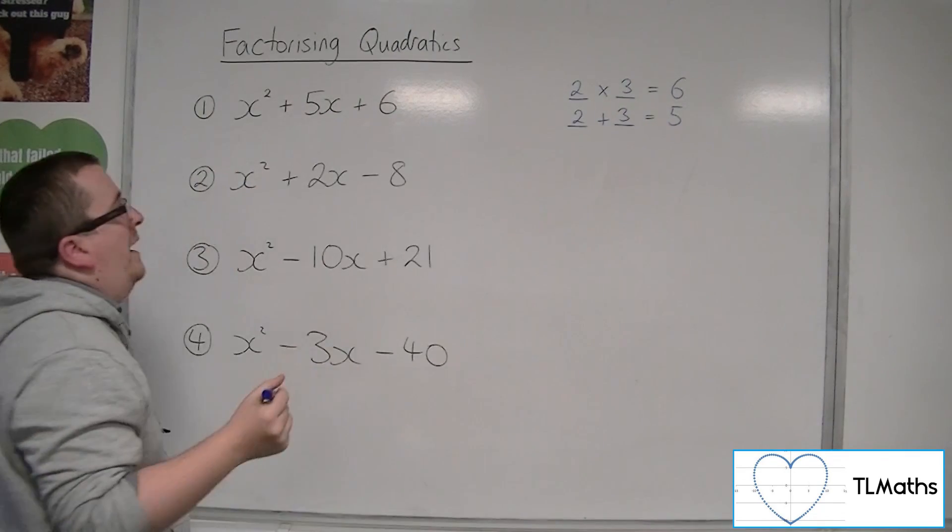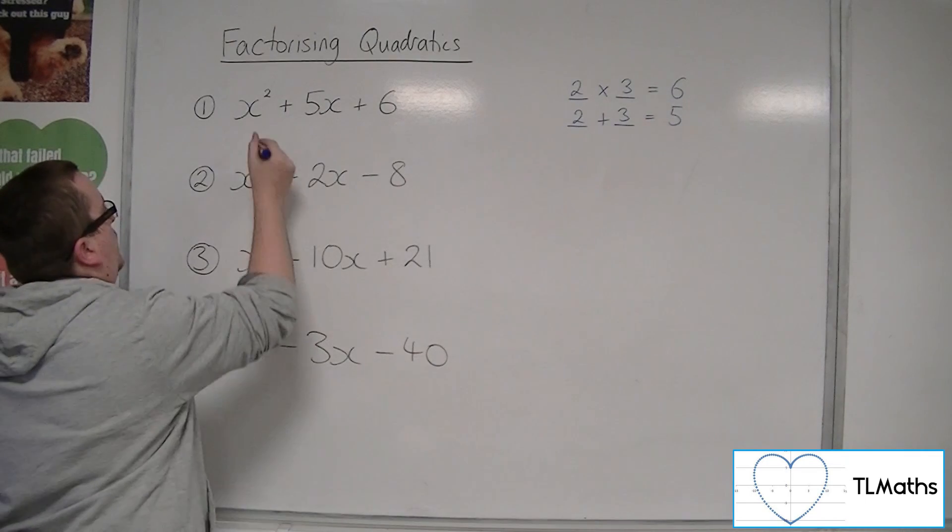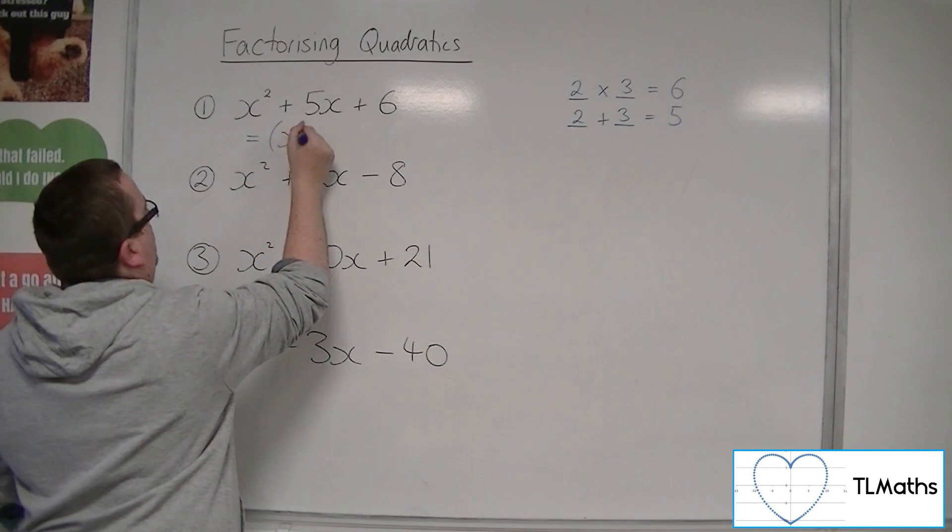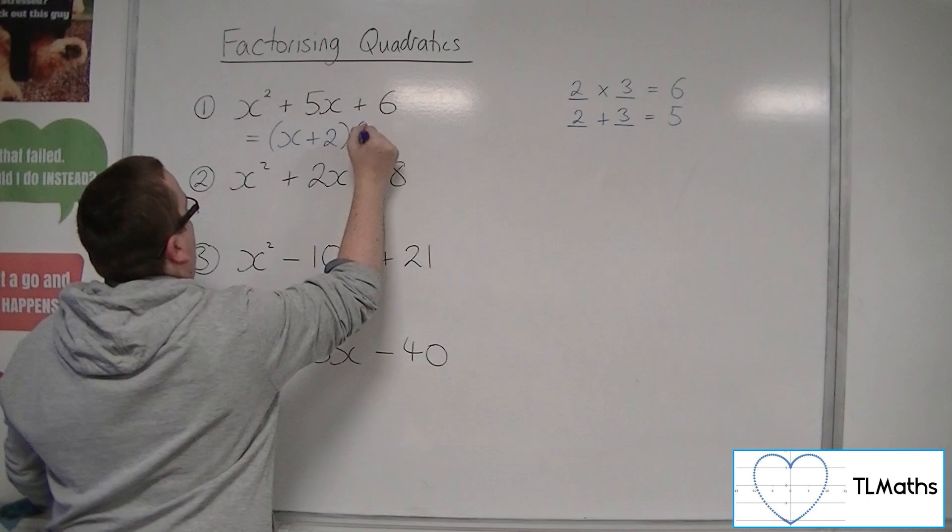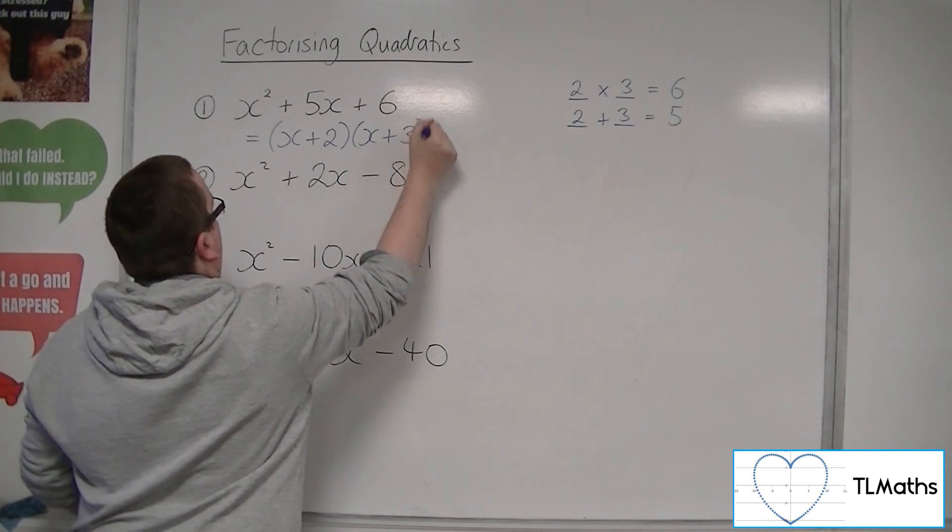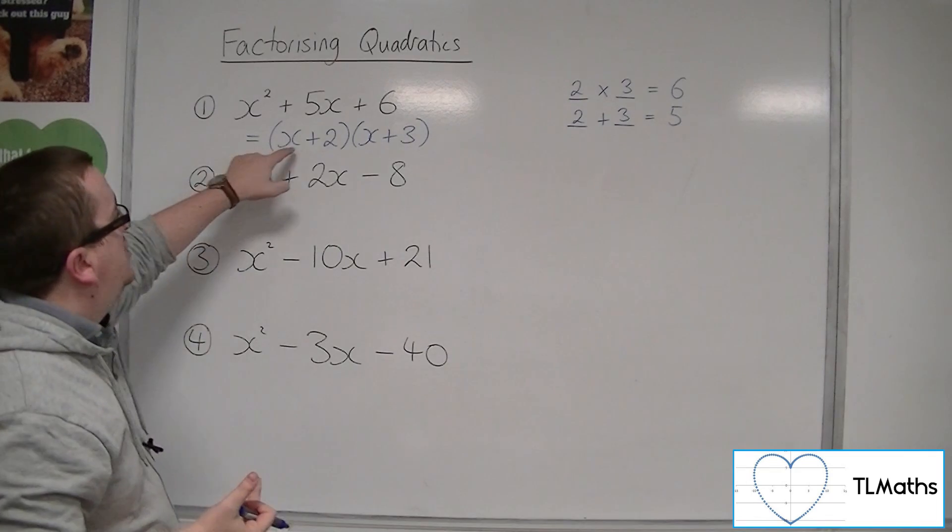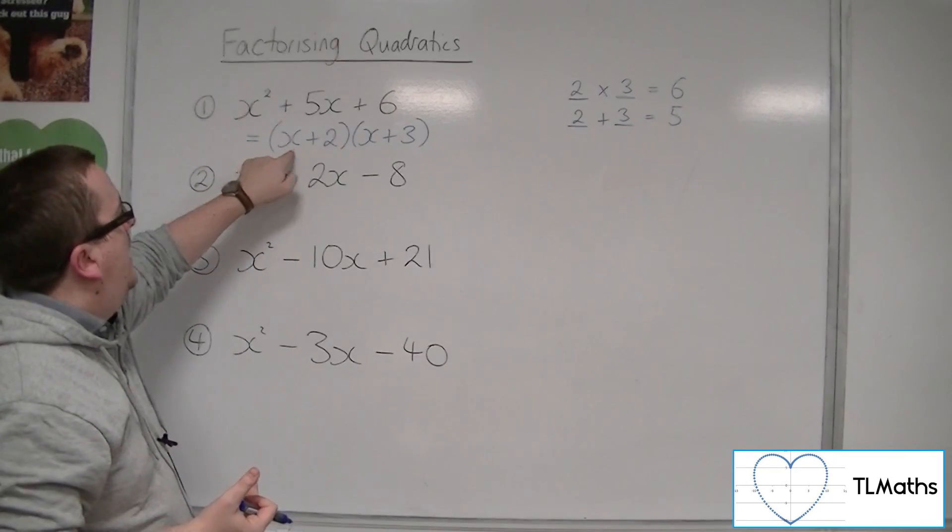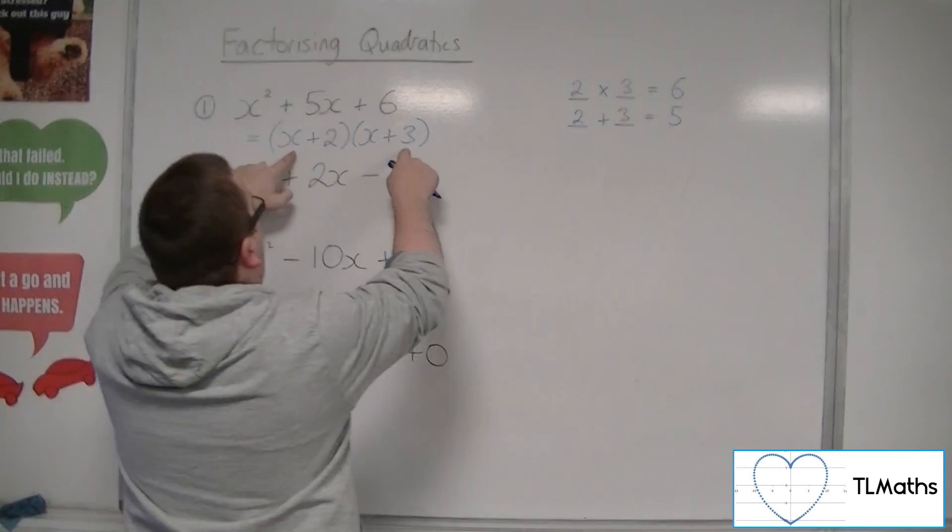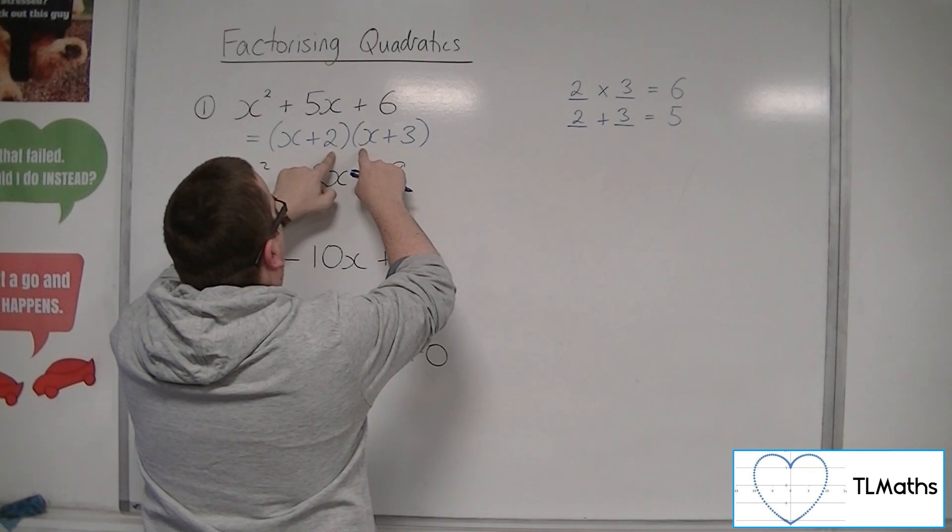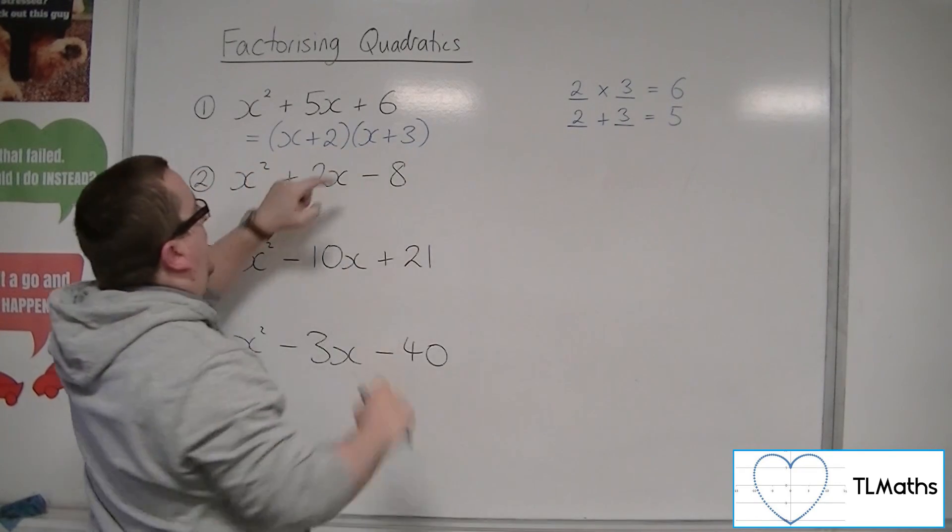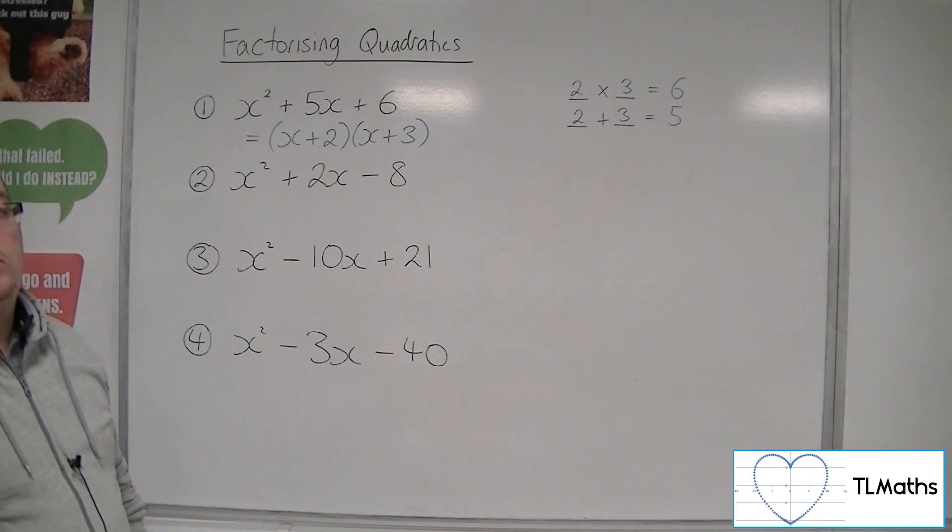So what that tells you is that we must have x plus 2 and x plus 3 inside the bracket. And we can always double check because we can expand the double brackets. It's x squared, 3x and 2x make 5x, and 2 times 3 is 6, which gets me to what we have there.